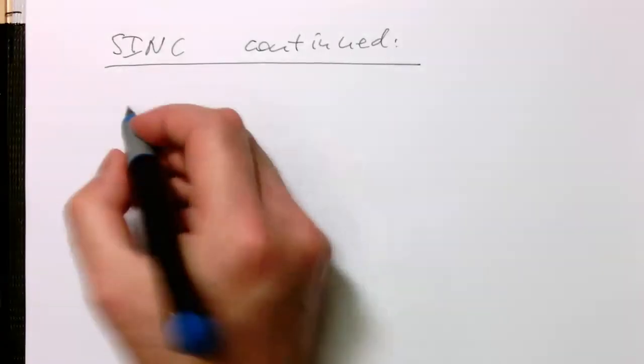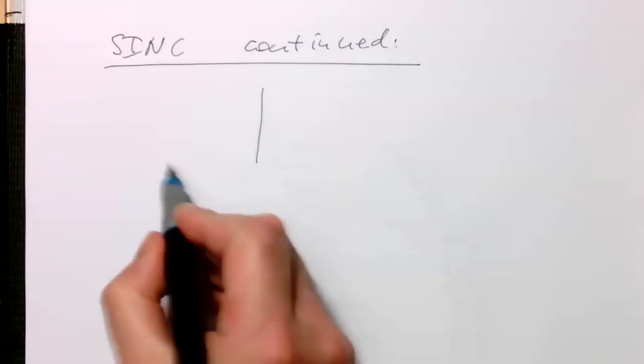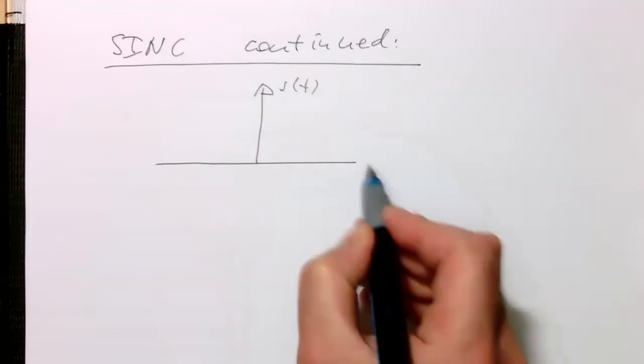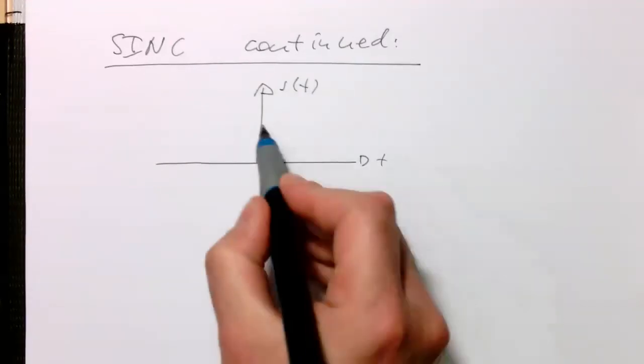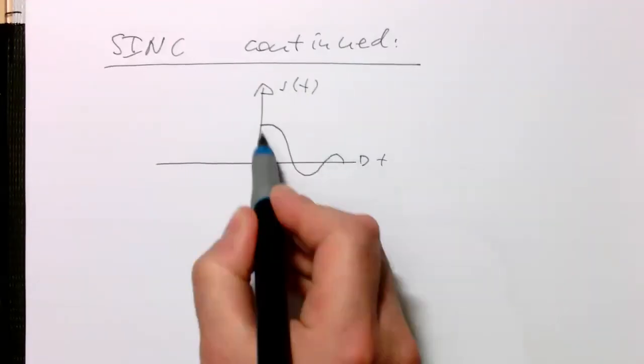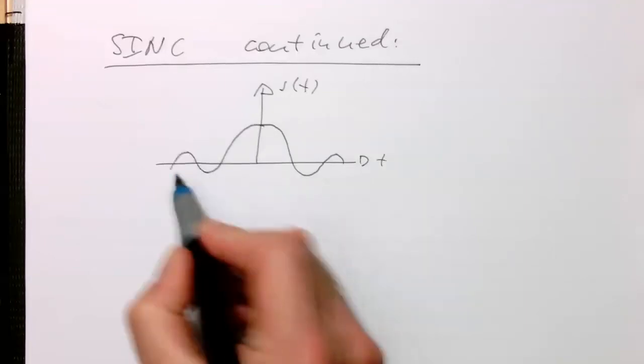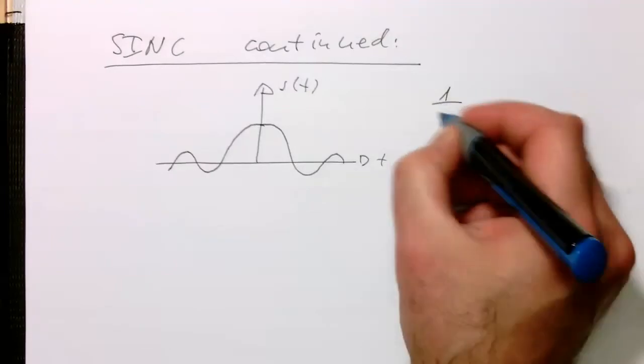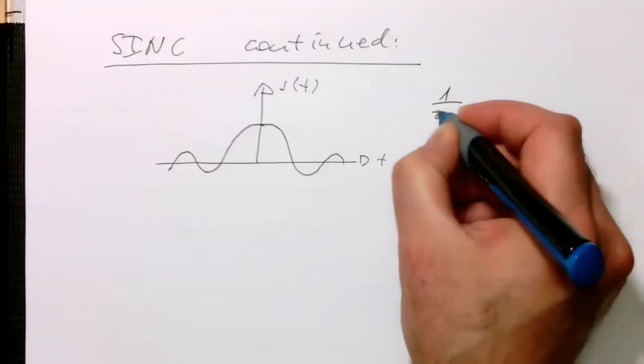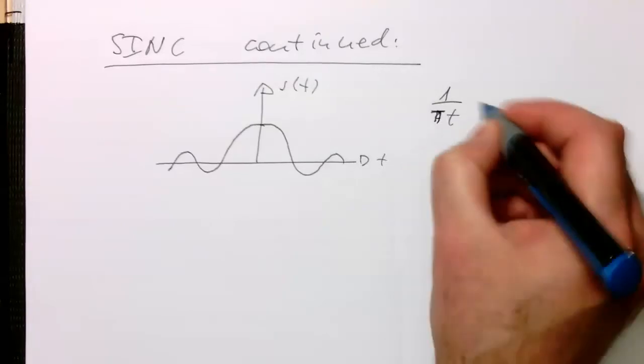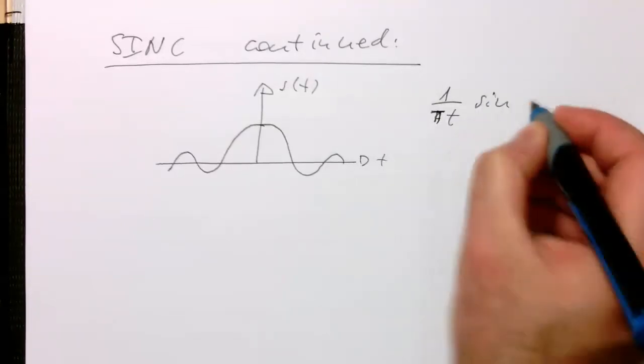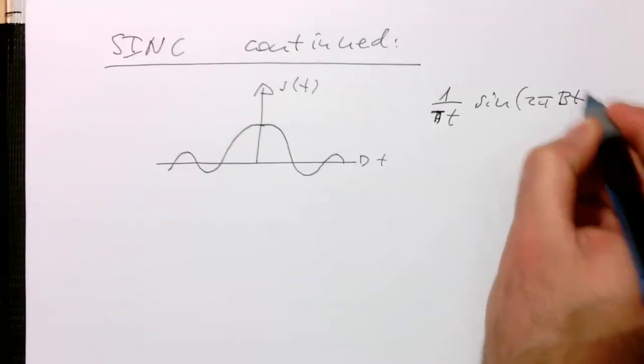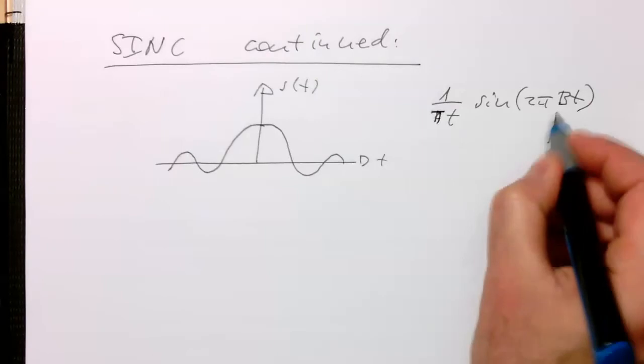So now with the sinc function, I just redraw this here. So that's our S of T. So that's the shape of our sinc function here. I just write the formula here, not two pi, just a pi. Pi T multiplied by sine of two pi B T. And remember, this was our bandwidth.